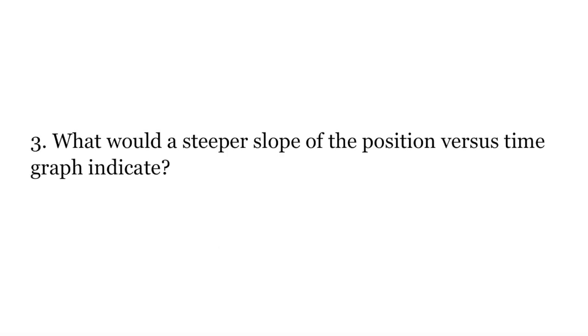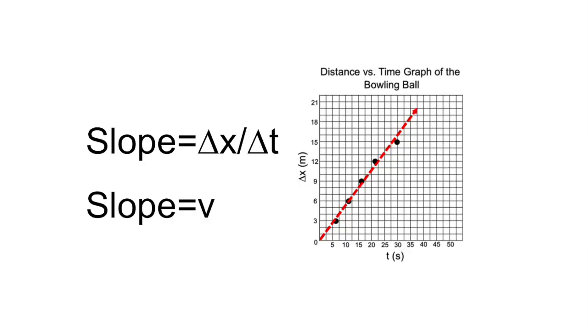Analysis question 3: What would a steeper slope of the position versus time graph indicate? The steeper the slope will indicate a faster constant velocity. This is due to the slope of the best fit line calculating the value of velocity.